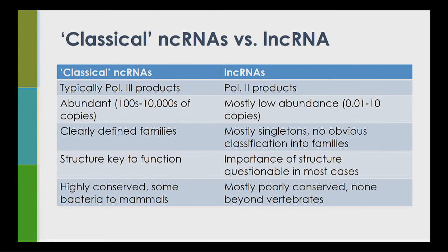Importantly, these RNAs are structured — if you take a random RNA and throw it into cells or solution, it's going to form a structure. But if we look at lncRNAs from different species or at the few cases where we have some understanding at the base-pair level, we don't really see evidence where structure is important. And whereas many classical non-coding RNAs are highly conserved, in some cases from prokaryotes to eukaryotes, lncRNAs tend to evolve rapidly.